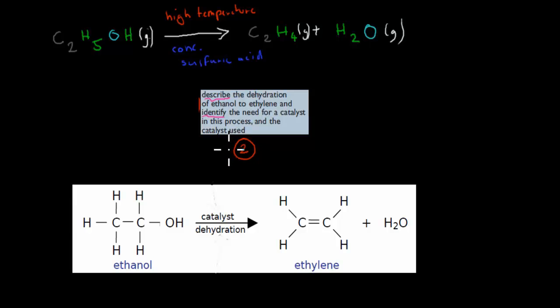Describe the dehydration of ethanol to ethylene, and identify the need for a catalyst in this process and the catalyst used. In this case, we've got ethanol. Ethanol, in the presence of high temperatures and concentrated sulfuric acid, goes into ethene plus water. So we've lost a water molecule. And here's ethanol structured. We will lose these molecules here for that catalytic reaction, which will then become ethylene, and we lose that water molecule, which was these two atoms here.